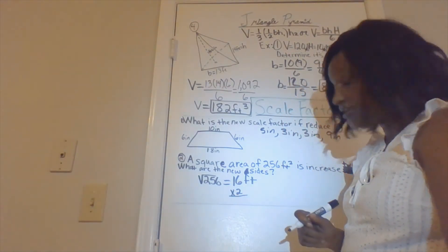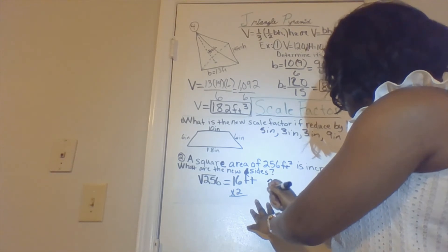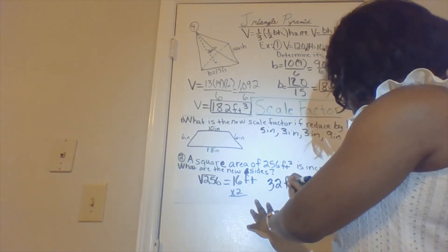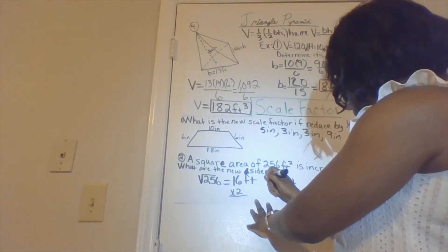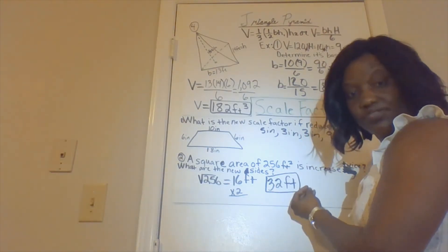You guys already know. The answer is 16 times 2 is 32. My new dimensions are 32 feet.